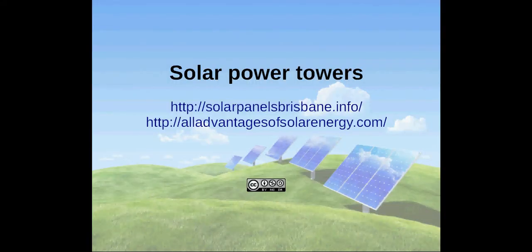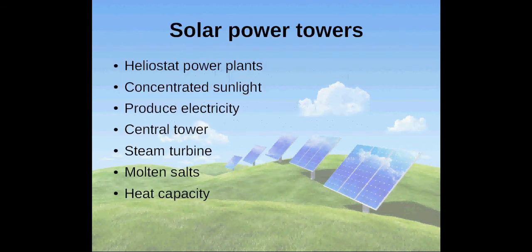Hello, I am Andreas and today I will explain how solar power towers work. Solar power towers, also called heliostat power plants, are facilities that use the heat from concentrated sunlight to produce electricity.